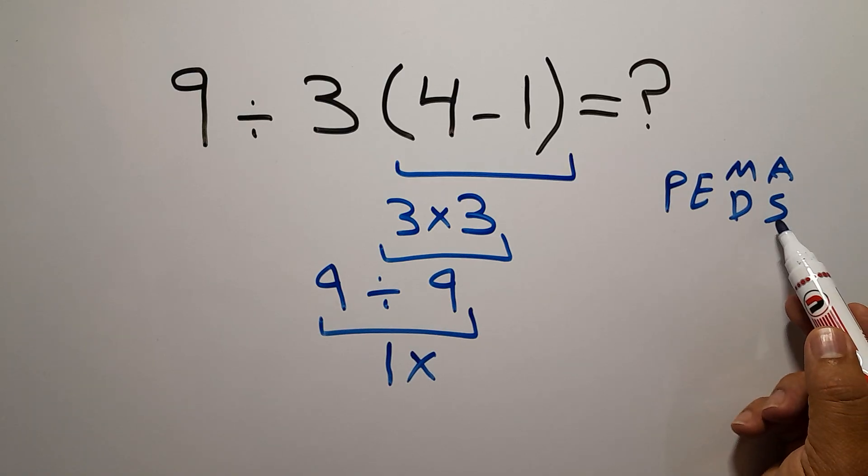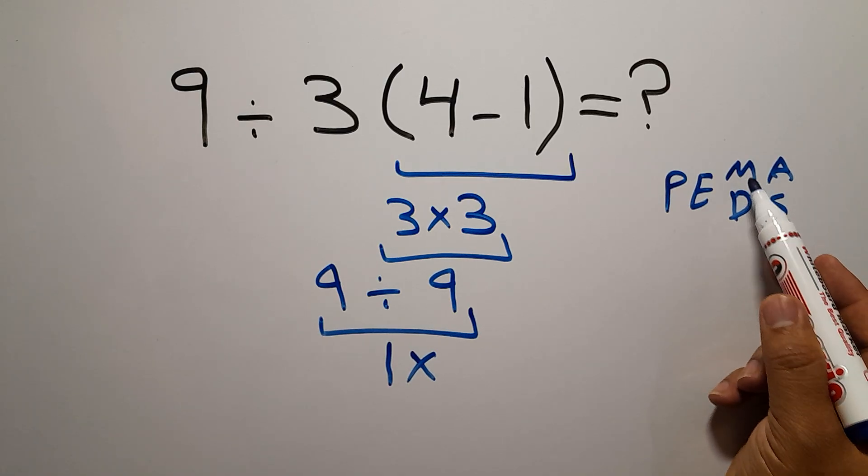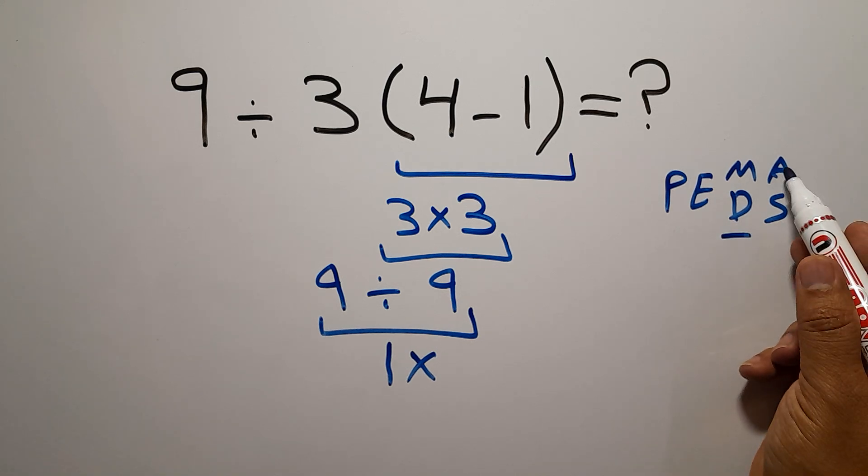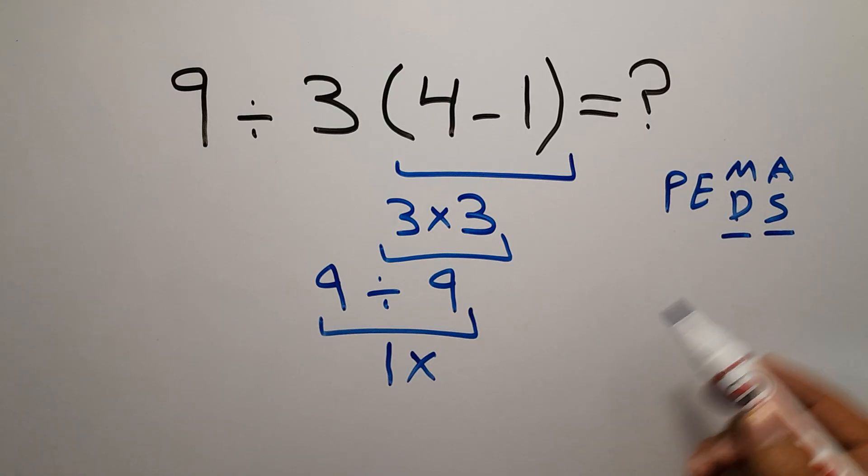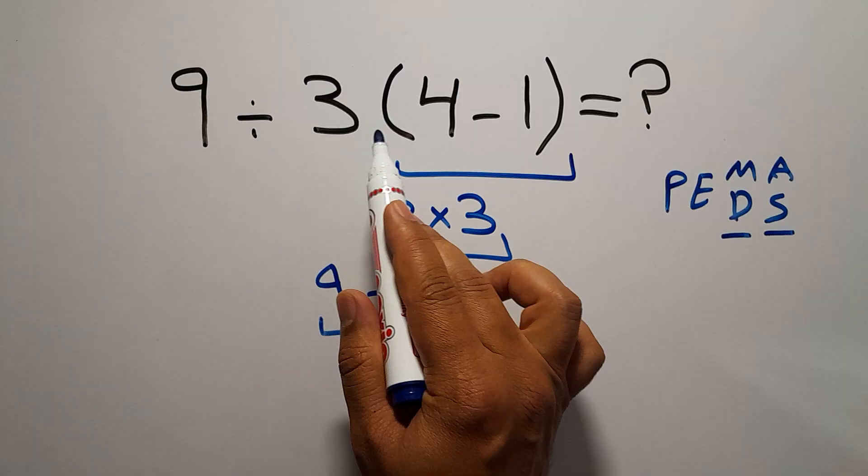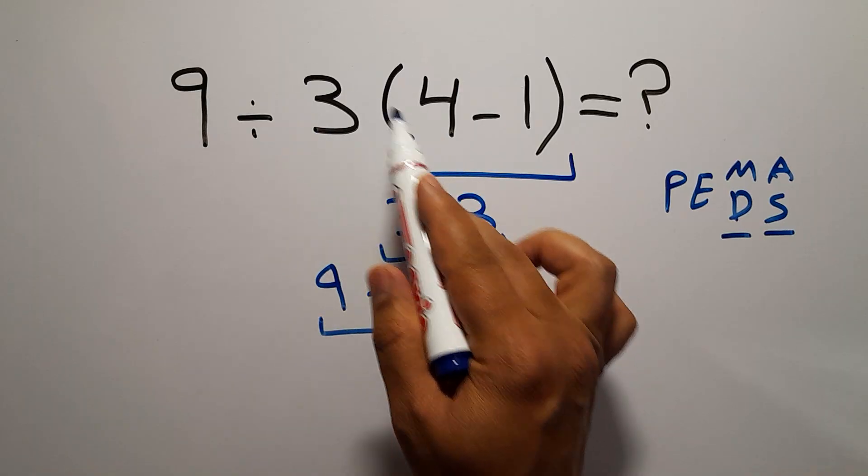Remember that multiplication and division have equal priority, and we work from left to right. The same applies to addition and subtraction. In this expression we have one division, one multiplication, and one parentheses. In PEMDAS, parentheses has higher priority than other operations.